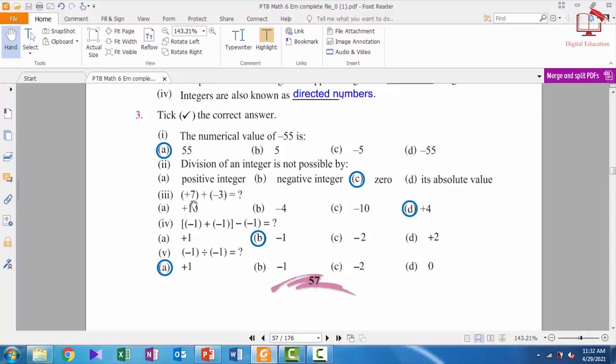Number 3: here we have (+7) + (-3). So students, plus and minus gives minus, so here we have -3. Now if we subtract 3 from 7, the answer is positive 4 because 7 is the greater integer and it has positive sign.